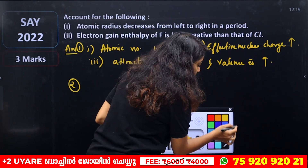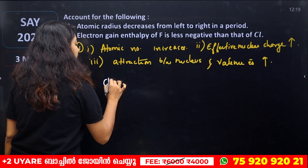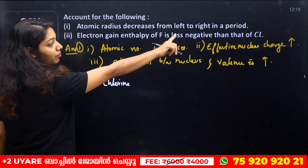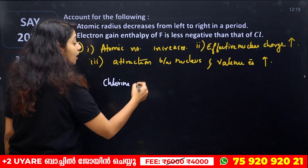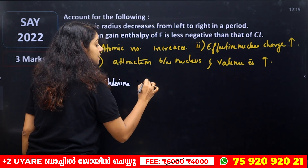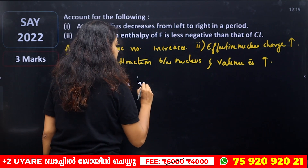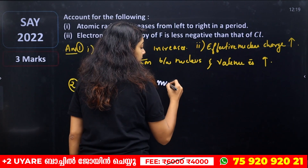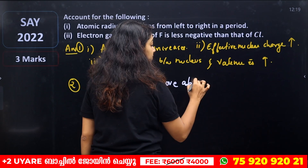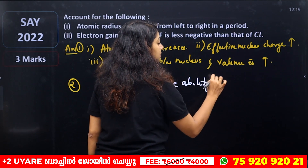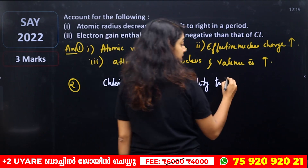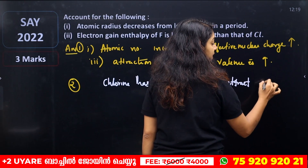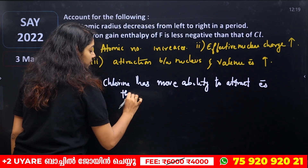Chlorine has a more negative electron gain enthalpy — it has more ability to attract electrons than fluorine. Fluorine is less negative than chlorine.